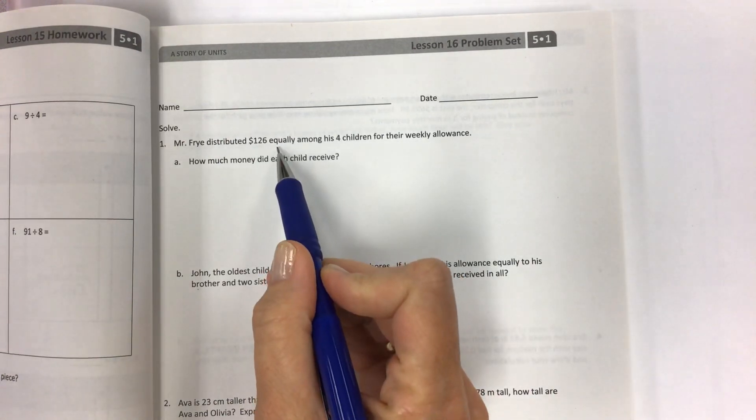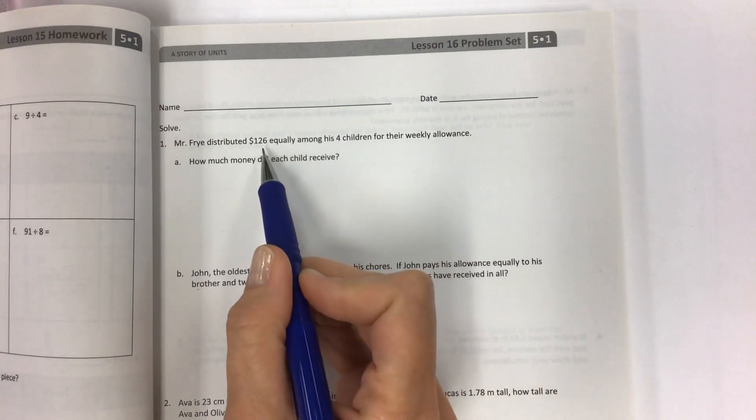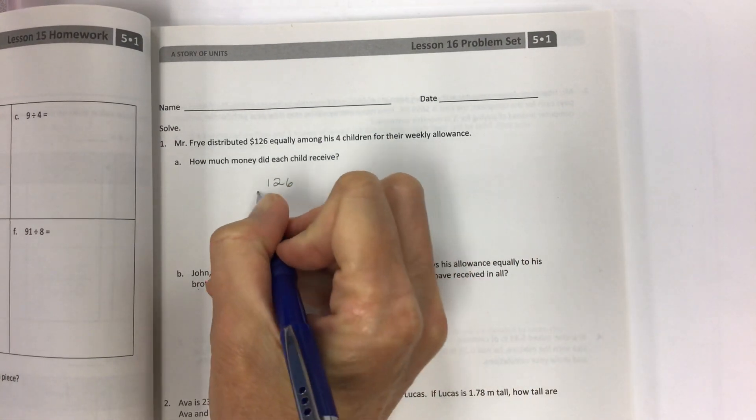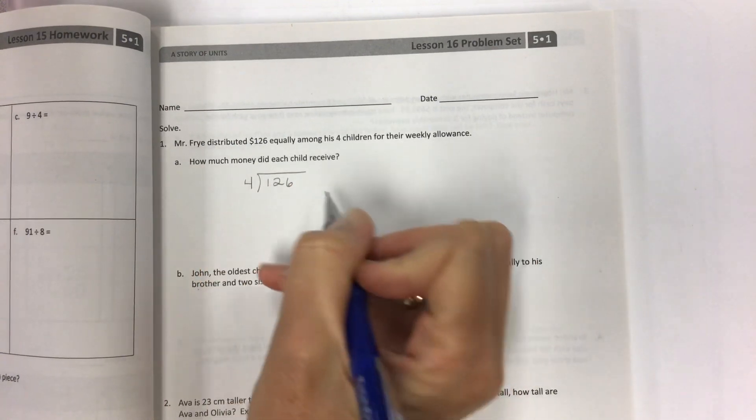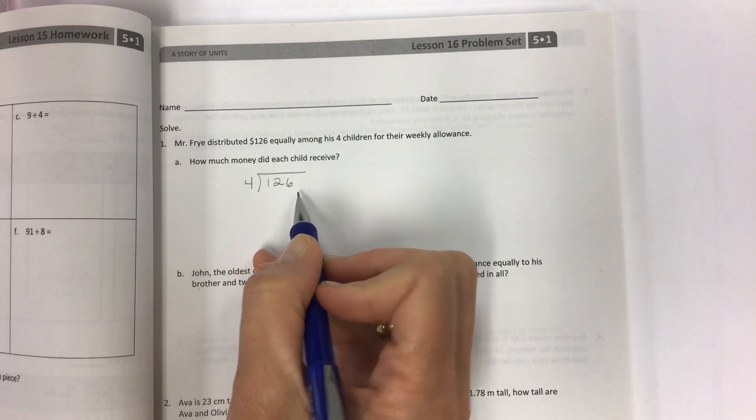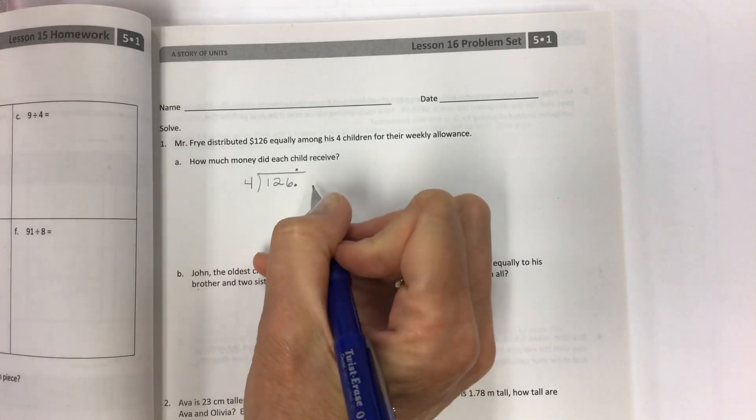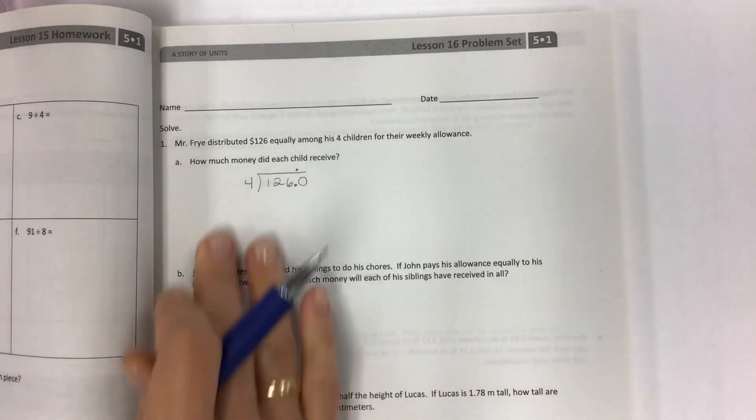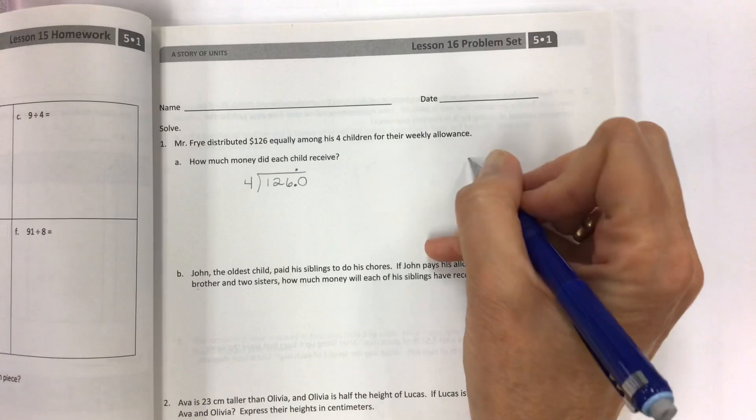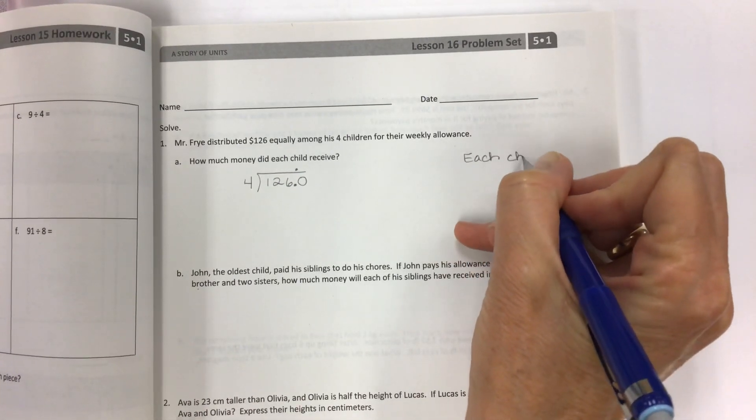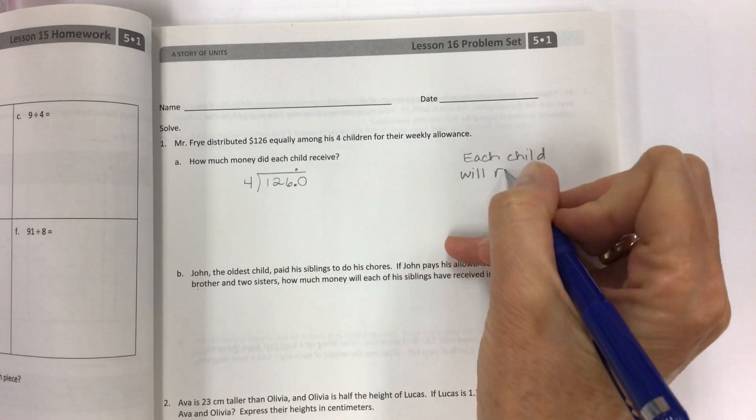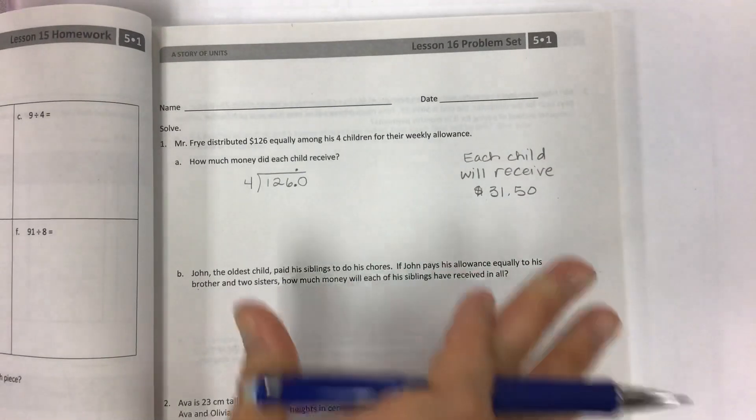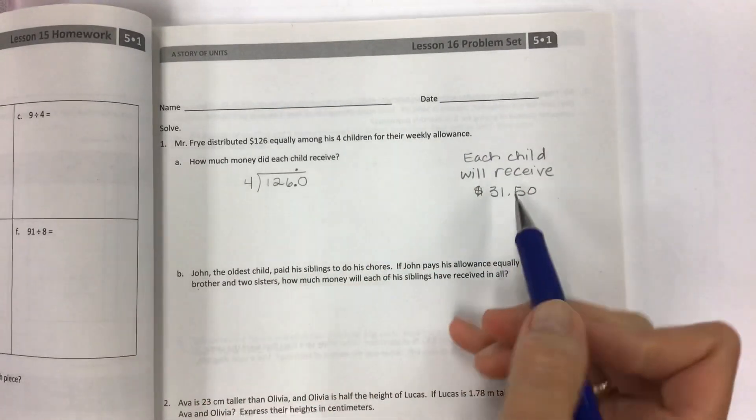Mr. Fry distributed $126 equally among his four children for their weekly allowance. How much money did each child receive? So you take your total 126 dollars and divide it among the four children. Now remember when we're dividing, every now and then you might have to annex a decimal and a zero just in case your division continues on. As you solve this and complete your work, your answer will be $31.50.